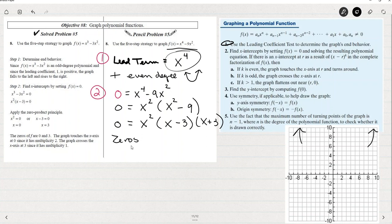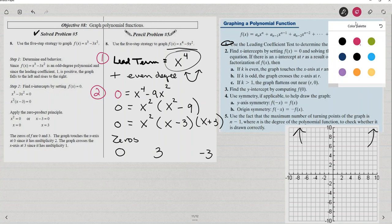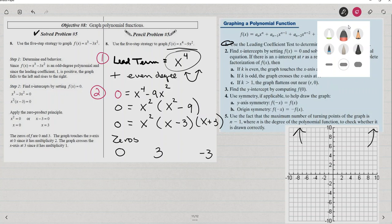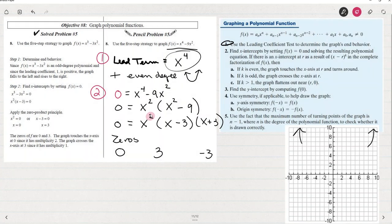So I can see the three zeros are zero, three, and negative three. Do you see which of those three zeros bounces back? So it doesn't cross over the x-axis, but it has a multiplicity of two, an even multiplicity. So that means that it bounces back. Here it is. It's that repeated root, the x squared.